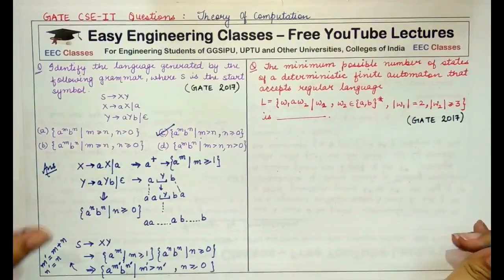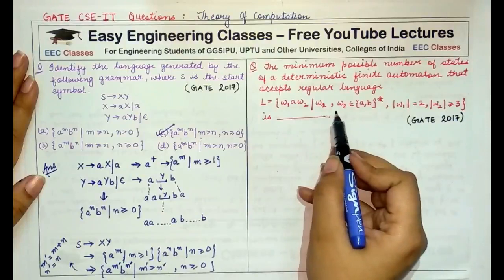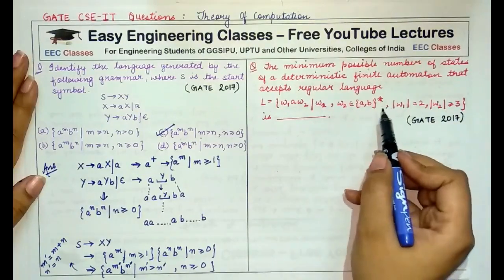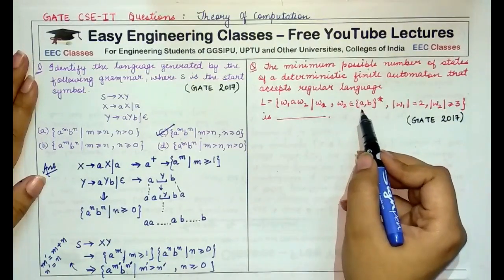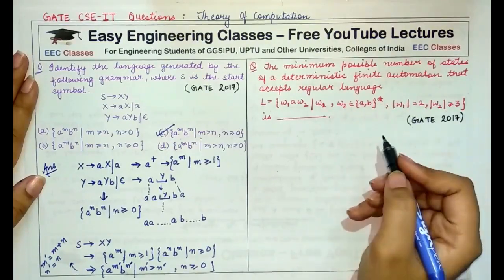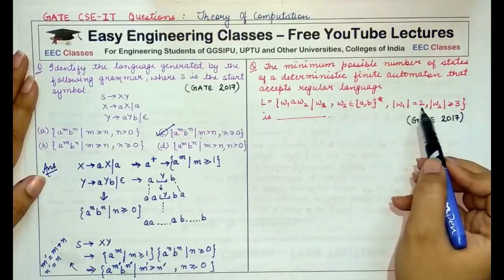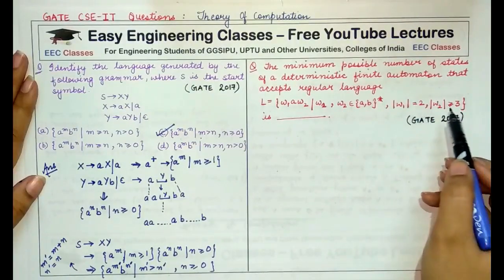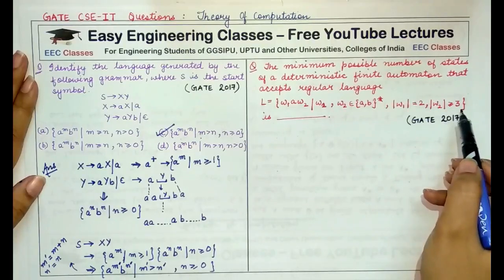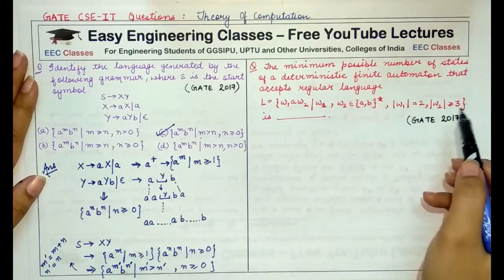The minimum possible number of states of a deterministic finite automata that accepts the given regular language. And the language has been given to you such that W1 and W2 are strings formed by the set A, B star. That means any number of occurrences of A and B in any order. And the length of W1 is equal to 2 exactly. And W2 has to be at least, the length of W2 has to be at least 3 or greater than 3.